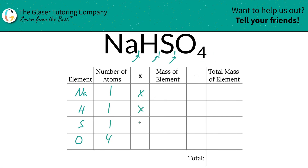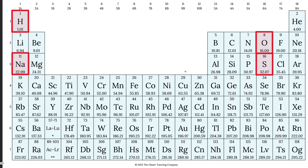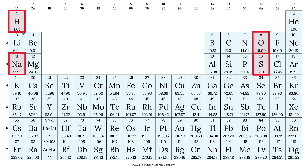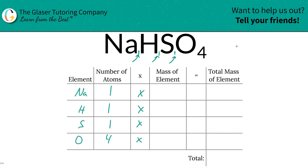Then we're going to take those number of atoms and multiply by the mass of each particular element. Those masses are found on the periodic table, so let's take a look. Sodium is 22.99, hydrogen is 1.01, sulfur is 32.07, and oxygen is 16. So we're going to write those in: 22.99, hydrogen is 1.01, sulfur was 32.07, and oxygen is 16.